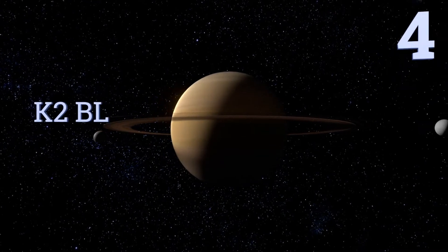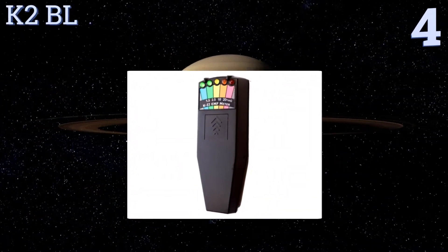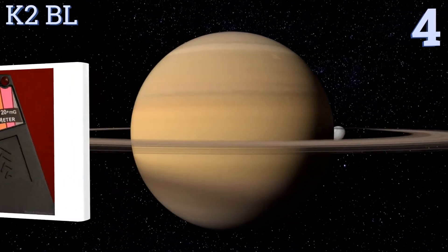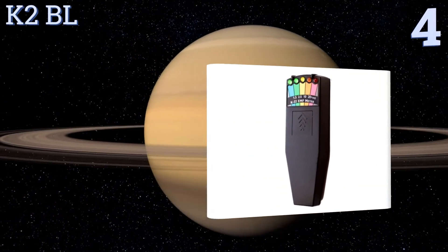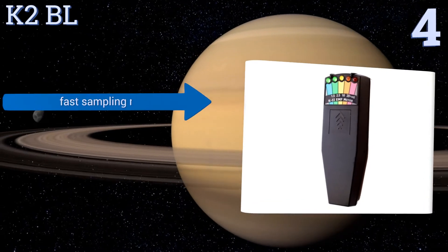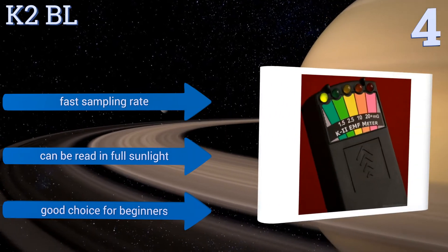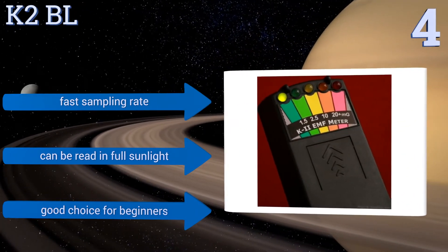At number 4, the K2BL uses a series of LED lights associated above a color-coded measurement scale to allow for quick and accurate readings. This durable, reliable tool is suitable for use in the field and small enough to fit in a pocket. It boasts a fast sampling rate and can be read in full sunlight. It's a good choice for beginners.